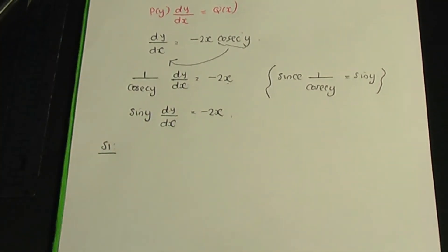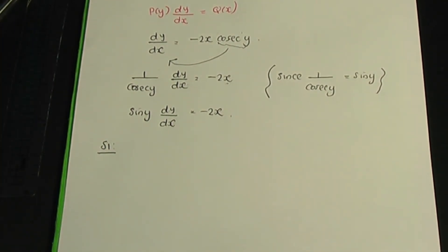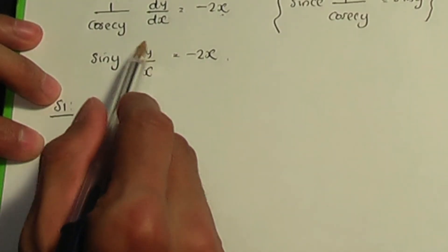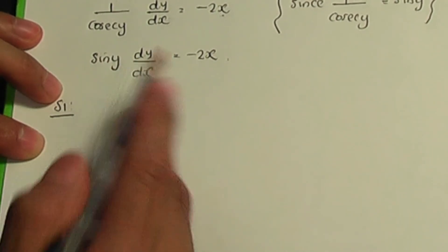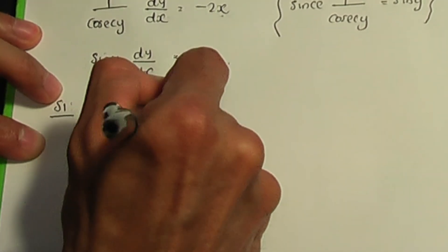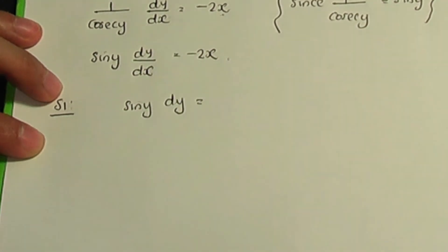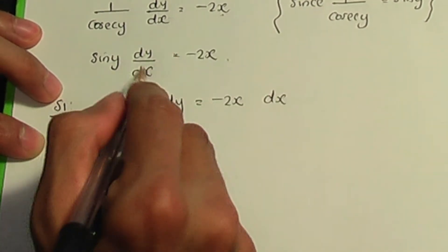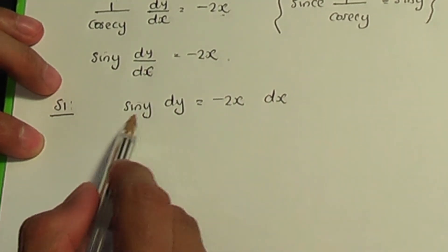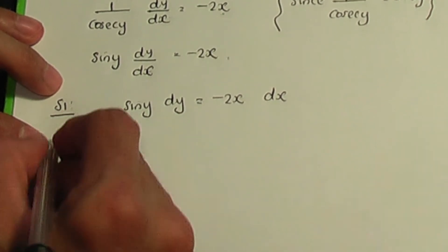Step one: separate the variables. Regard dy/dx as a fraction. Keep sin y and dy on the left-hand side, and keep −2x and dx on the right-hand side. So sin y dy = −2x dx. That is what step one — separating the variables — is about.